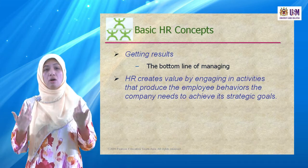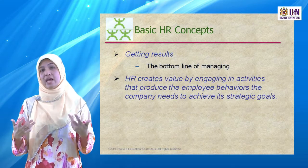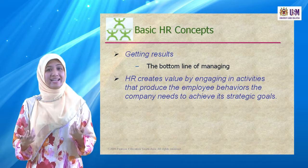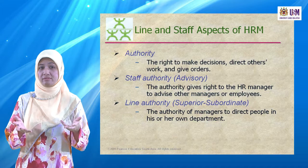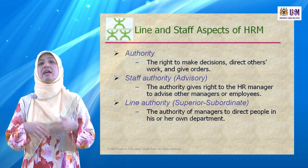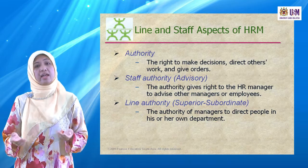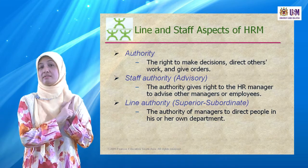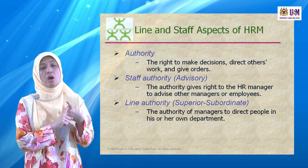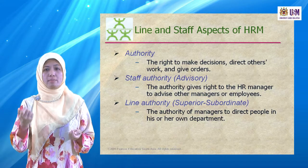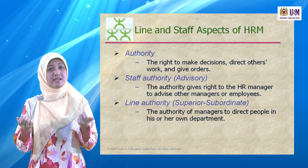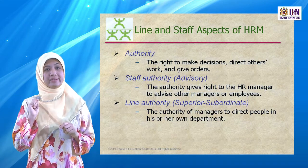We have to make sure all staff are aligned to one goal to complete the company's mission and vision. In the HR department, there is authority — the power or right to make decisions and direct others. There are two types of authority: staff authority, which is an advisory role, and line authority, which is the superior-subordinate role. Staff authority gives the HR manager the right to advise other managers, while line authority is the authority of managers to direct people in their own department.